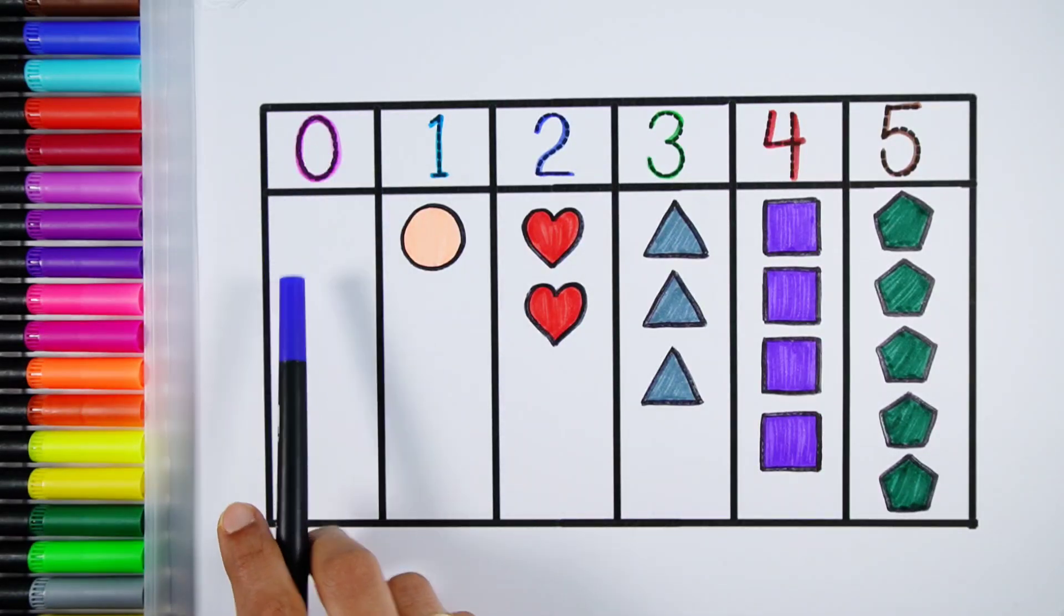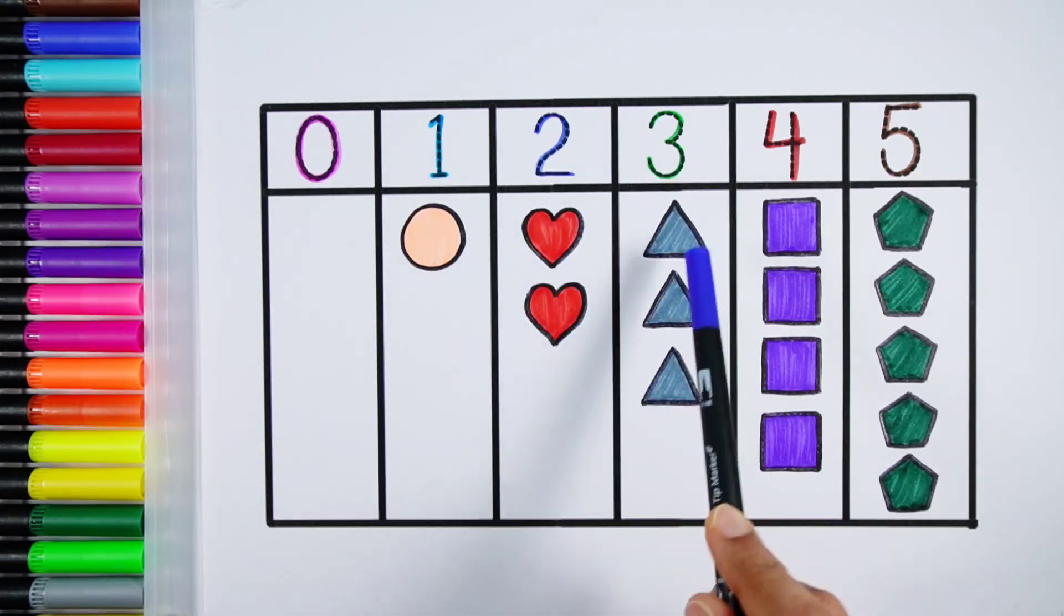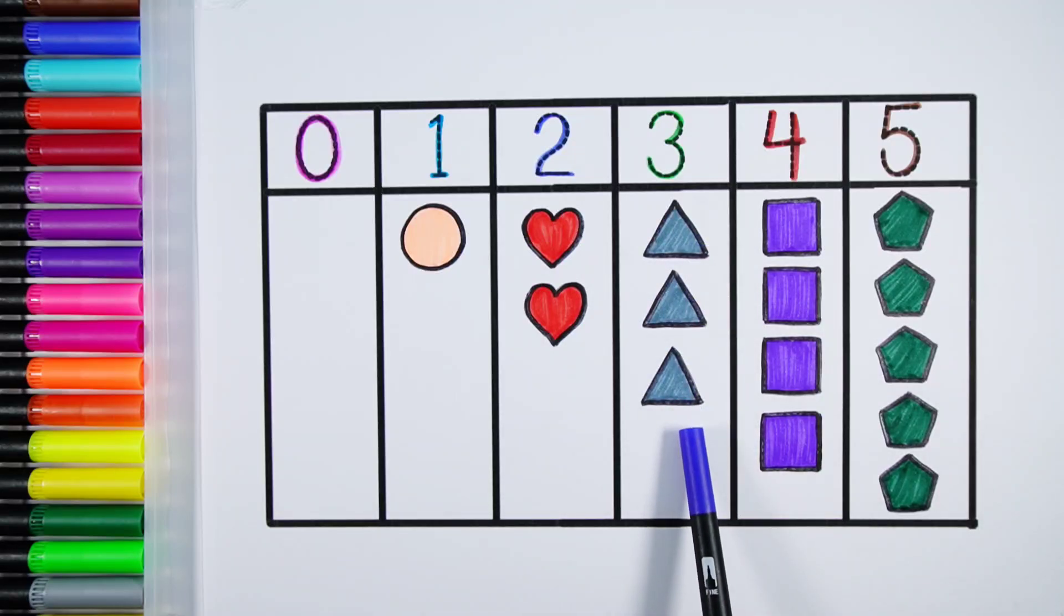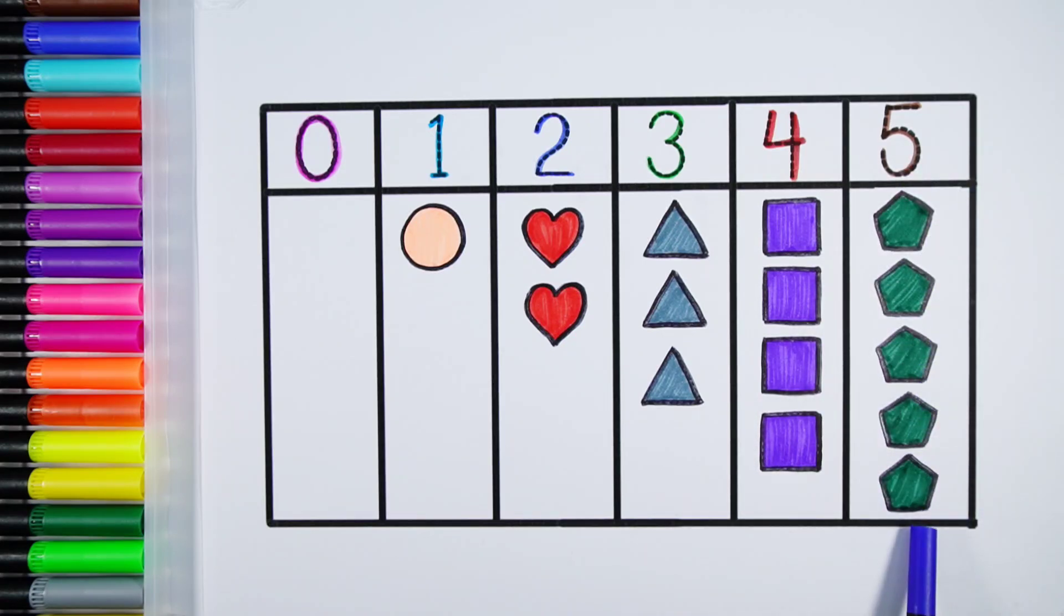Zero, zero shapes. One, one circle. Two, one, two, two hearts. Three, one, two, three, three triangles. Four, one, two, three, four, four squares. Five, one, two, three, four, five, five pentagons.